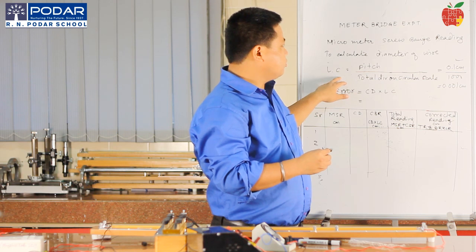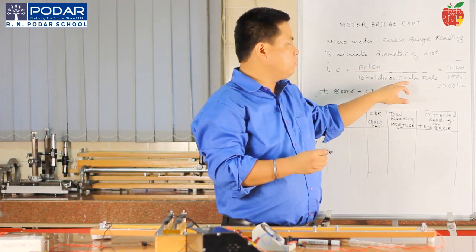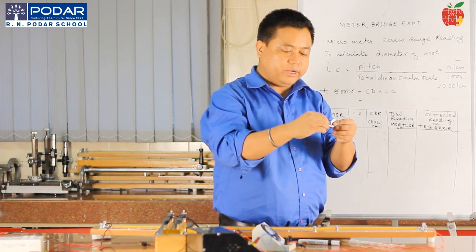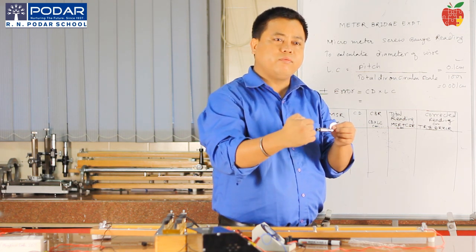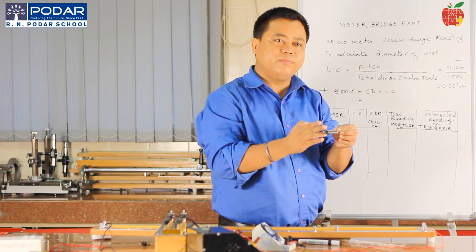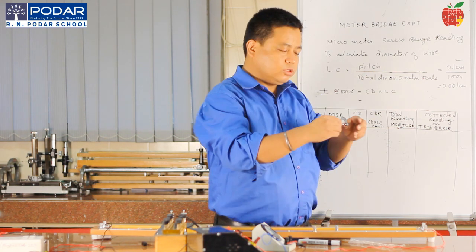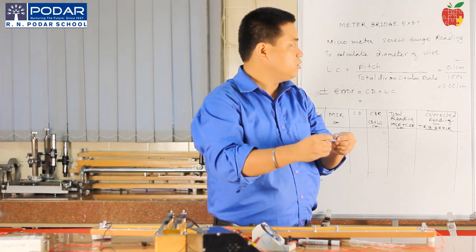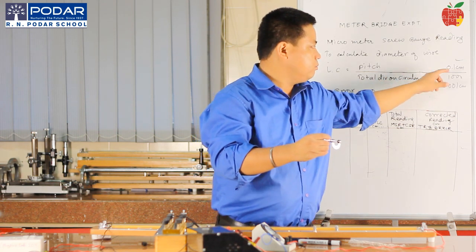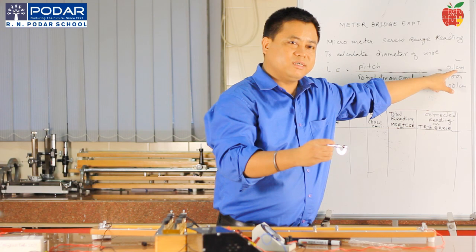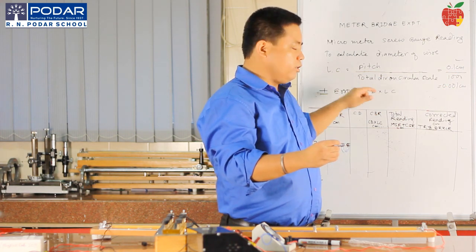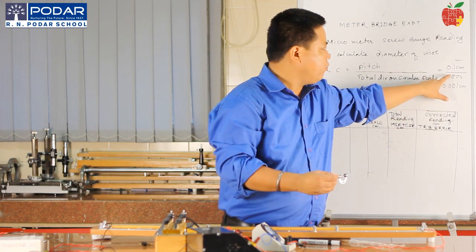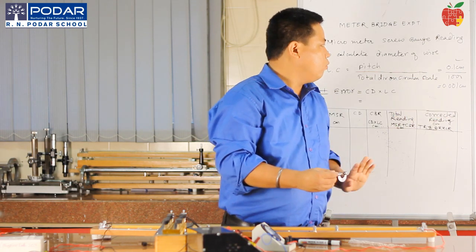The least count of the micrometer screw gauge is pitch divided by the total divisions on the circular scale. Pitch is the linear distance traveled on the main scale when the circular scale is rotated by one full rotation. When I rotate it once, the distance traveled on the linear scale is 0.1 cm. The total divisions on the circular scale are 100. So the least count is 0.1 divided by 100, which equals 0.001 cm.